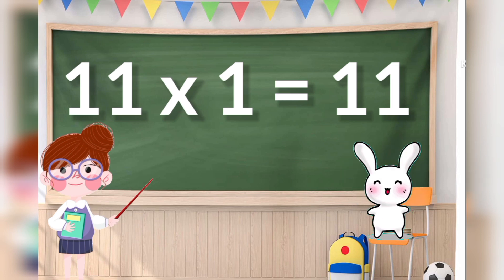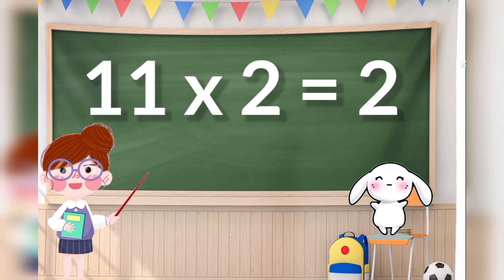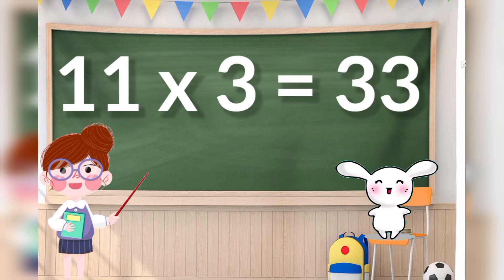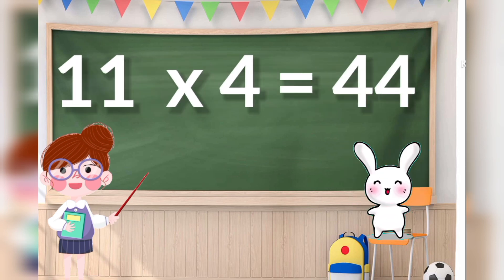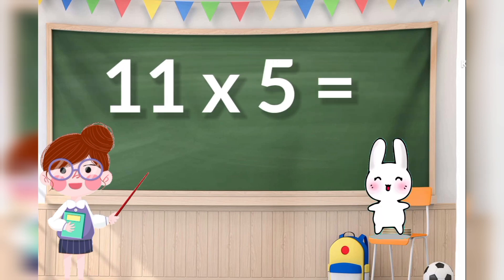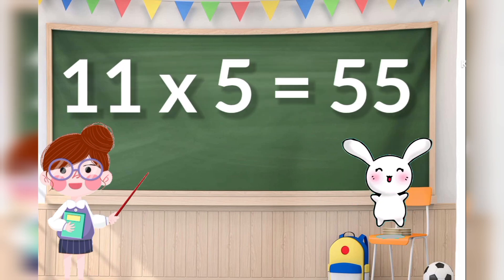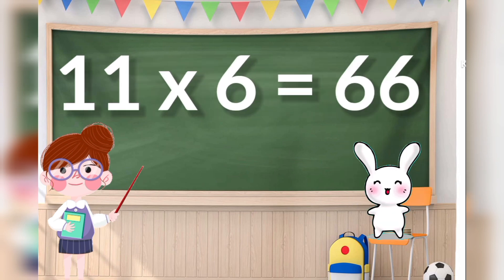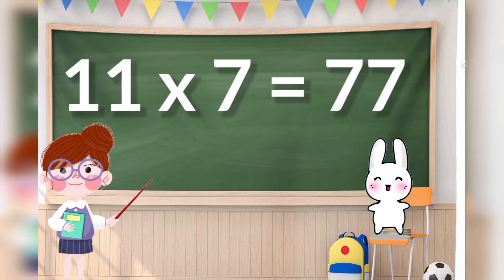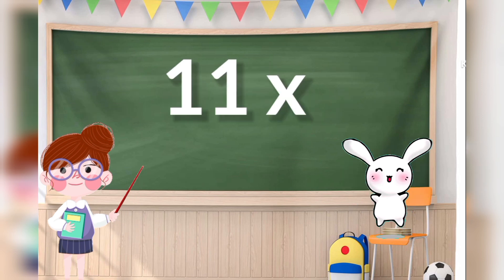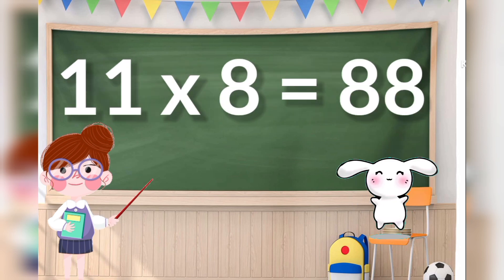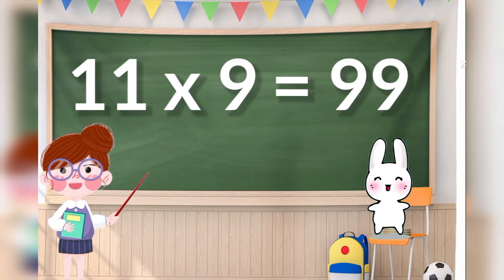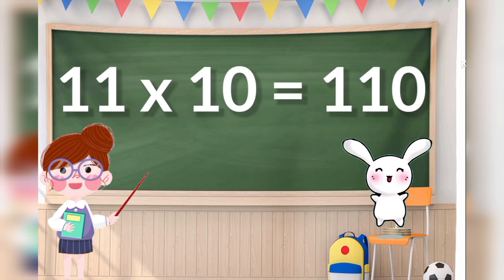11 ones are 11, 11 twos are 22, 11 threes are 33, 11 fours are 44, 11 fives are 55, 11 sixes are 66, 11 sevens are 77, 11 eights are 88, 11 nines are 99, 11 tens are 110.